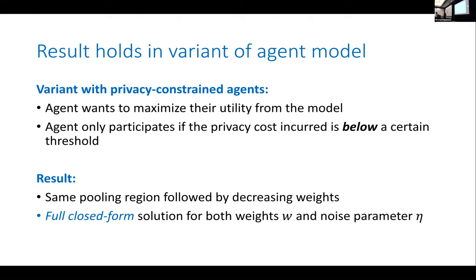We also consider a variant model with a less sophisticated user who can't necessarily trade off model accuracy against privacy cost. Instead, each agent has a maximum threshold on the privacy loss they're willing to incur, and they participate as long as their privacy is better than that threshold. They still prefer the most accurate model possible. In this variant, the solution has the same structure — a pooling region for lower privacy costs and decreasing weights for higher privacy costs.